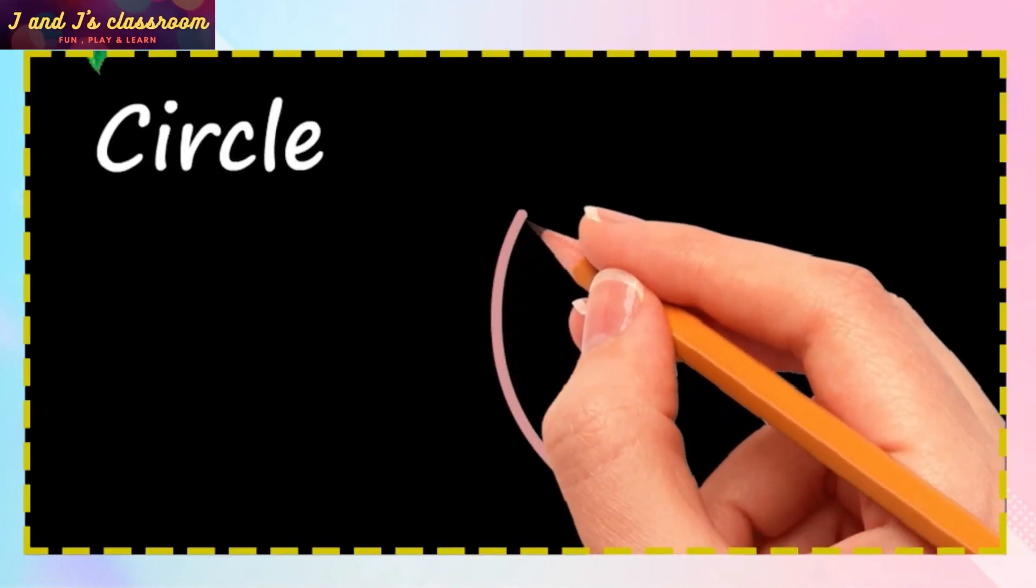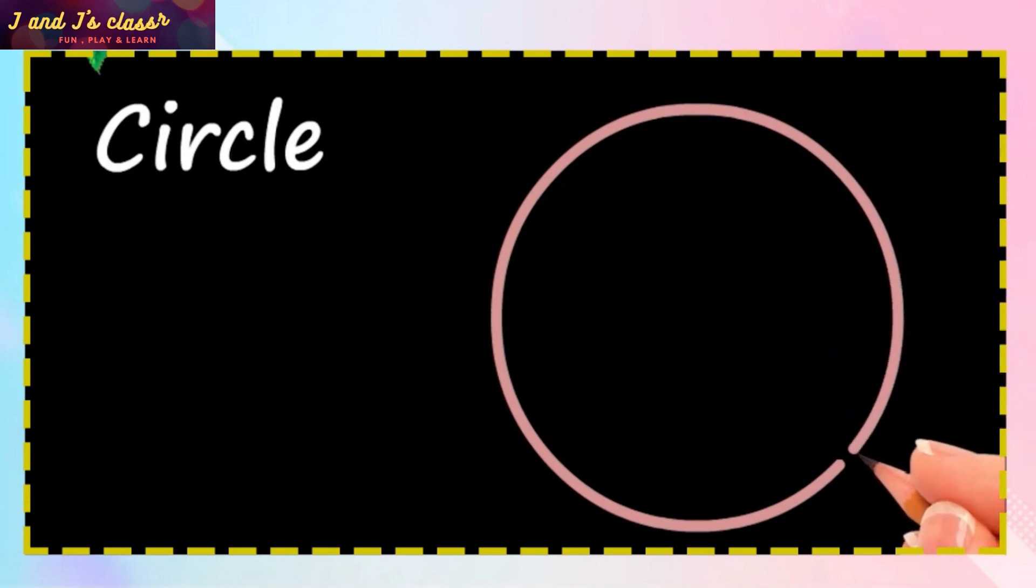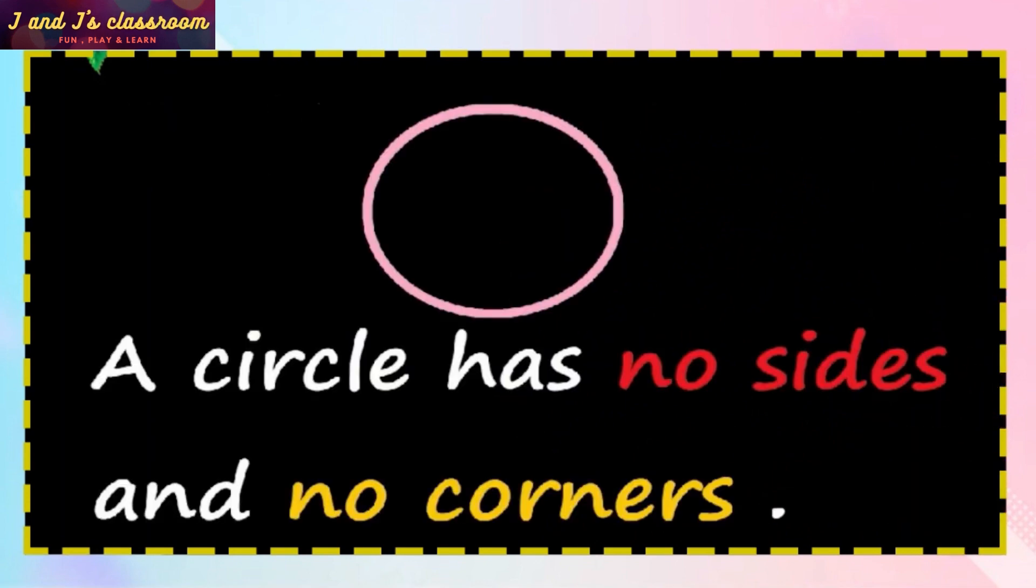Circle. Draw a big curve line. What it is? Circle. A circle has no sides and no corners.